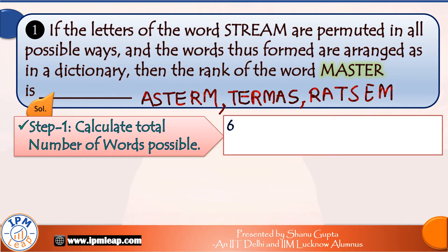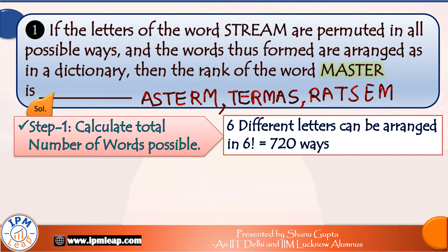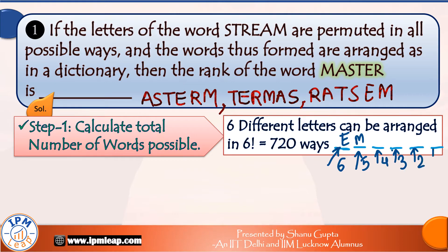Six different letters can be arranged in six factorial, that is 720 ways. The first place can be filled in six ways because all six letters are available. Suppose you fill E here — one letter gone, now five letters remain for the second place. Once you fill the second place in five ways, say with M, four letters remain for the third place. This pattern continues until the last place has only one letter. By the fundamental rule of counting, these six places can be filled in 6×5×4×3×2×1, that is 6! ways, and there would be that many words possible.